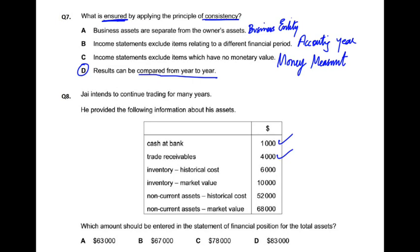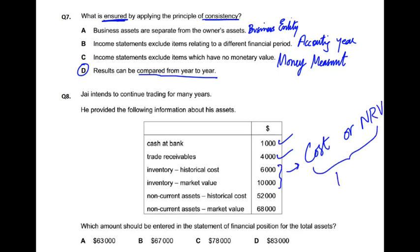Trade receivables की value 4000 एक दिविये। Inventory में 2 values दिविये। Inventory का एक standard है जो कहलाता है IAS 2। IAS 2 एक standard है — इसका नाम याद न भी रहे तो मसला नहीं। यह standard कहता है inventory को cost और net realizable value (NRV) दोनों में से lower value पर रखना है।